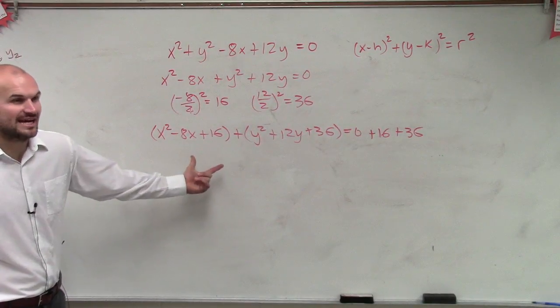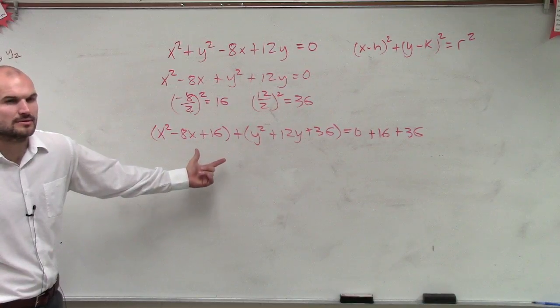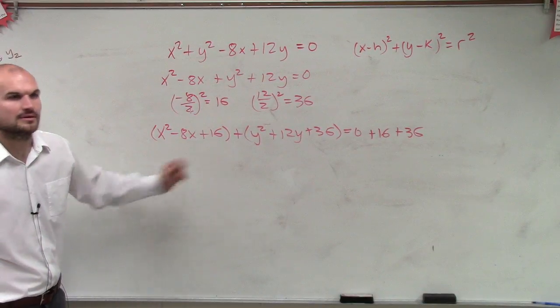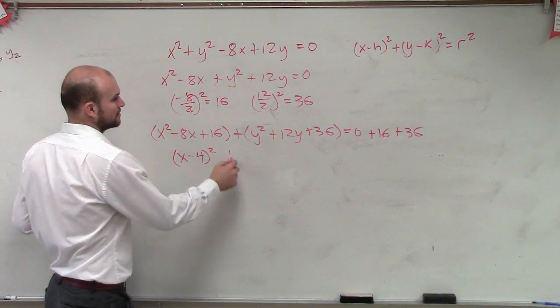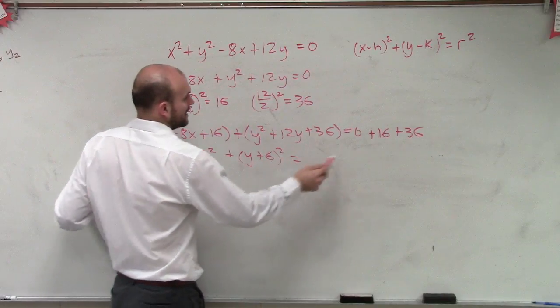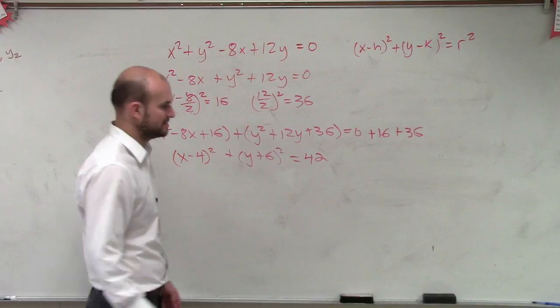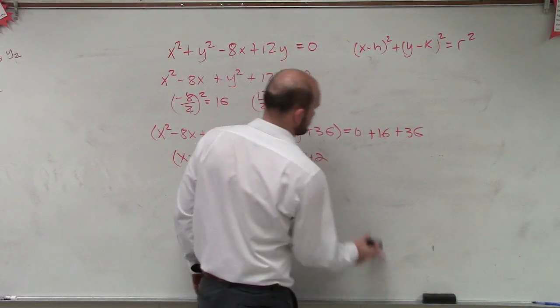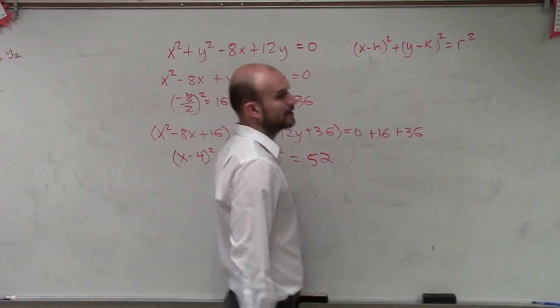Now I can rewrite this as a binomial squared. So by factoring this, I write this as x minus 4 squared plus y plus 6 squared equals 52.